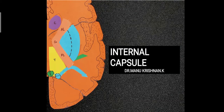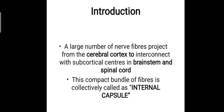Hi everyone, this is Dr. Manu Krishnangi and today we discuss the anatomy of the internal capsule. A large number of nerve fibers project from the cerebral cortex — from the gray matter — to interconnect with the subcortical centers in the brainstem and the spinal cord. This compact bundle of fibers is collectively called the internal capsule.